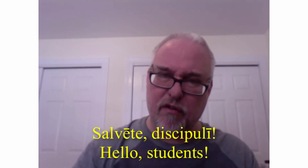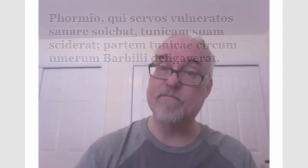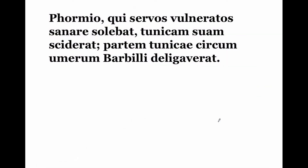In this tutorial video, we will study some select sentences from the story Remedium Astrologii in which, after Barbalus has been seriously wounded, we will begin to explore how we can help him recover. Formio, qui servos vulneratos sanare solebat, tunicam suam sciderat, partem tunicai circumumerum barbili deligaverat.